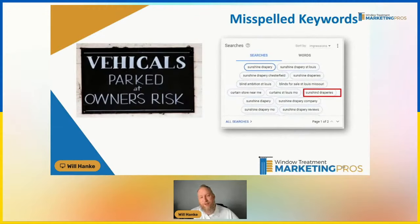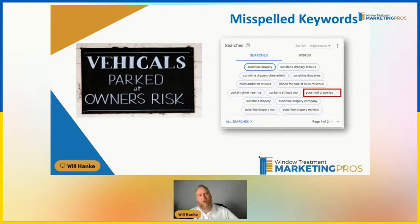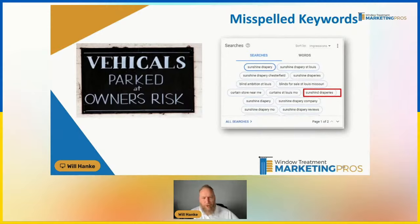Misspelled keywords — this is another example of something you could take advantage of. It's a pretty small amount of people searching for your brand who misspell 'draperies' or something like that. But back to the Google Knowledge Graph, they also understand misspellings of words. If somebody does misspell something, a lot of times Google says 'did you mean' and then spells it right. But you can target specifically those kinds of things.